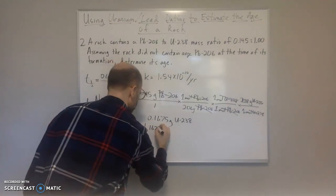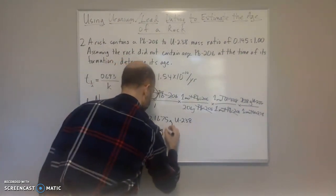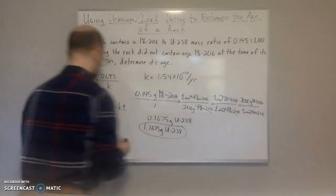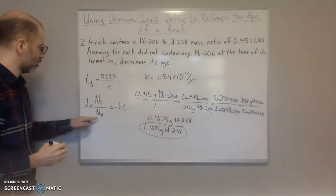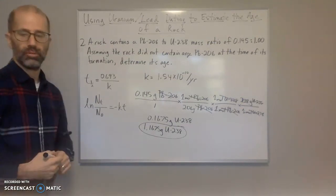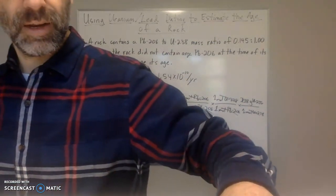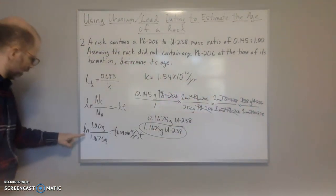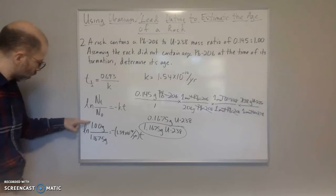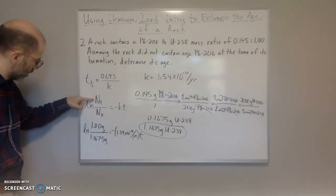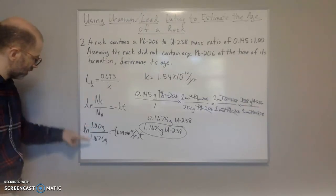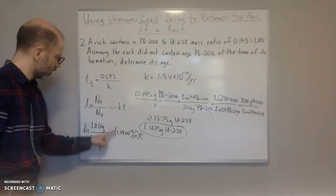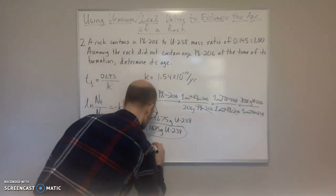We add that to the leftover amount. So we get 1.1675 grams of the U-238 to begin with. So now we plug that into here, along with K, and we solve. Let's go ahead and do that.